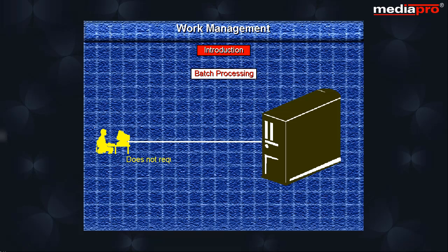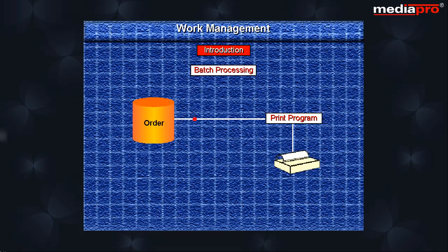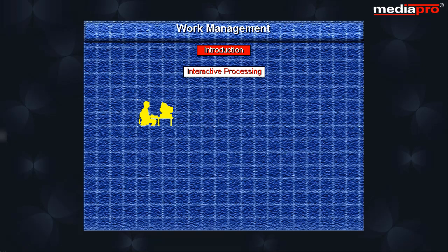Batch processing, on the other hand, does not require continuous communication between the user and the system. For example, a program that prints orders from an order file does not require any interaction with the user. The user has to only start the processing by calling the program, and then the system can run the program without requiring any input from the user.